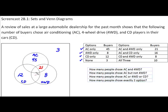We have 16 people that chose air conditioning and CD players only. I'm going to enter those 16 out here — the intersection of air conditioning and CDs goes all the way along here, but we don't want to be in the area that's also in four-wheel drive. And then finally we have those people that chose CD and four-wheel drive only. That's this intersection, but because we don't want air conditioning, those 8 belong out there.